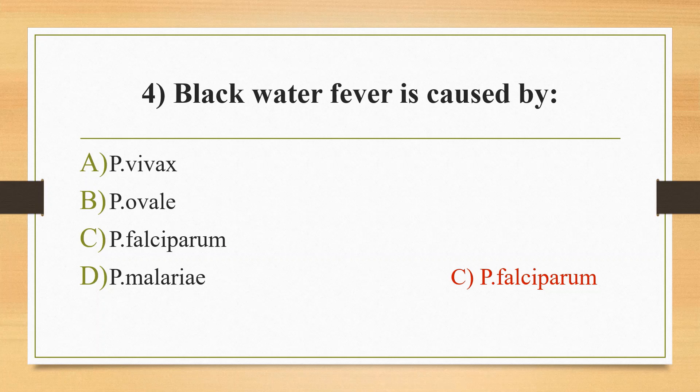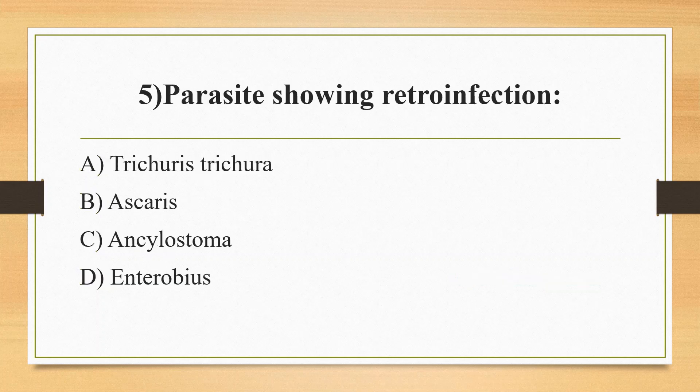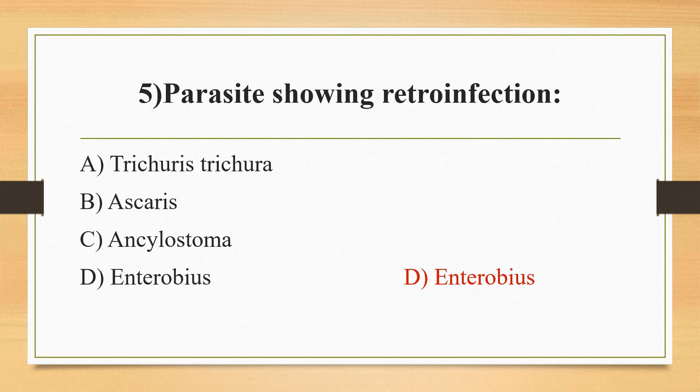Fifth question: parasite showing retroinfection — option A Trichuris trichiura, option B Ascaris, option C Schistosoma, option D Enterobius. The answer is option D, Enterobius. Enterobius vermicularis is also called pinworm; the NIH swab is used for the collection of eggs from the perianal area.